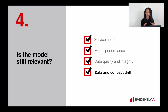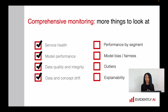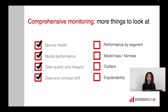I would say these four groups of metrics — service health, model performance, data quality and integrity, and data and concept drift — are a very good starting point. But of course you don't have to limit yourself to those four groups. It always depends on the sensitivity of your case, the risks you have, and your resources.